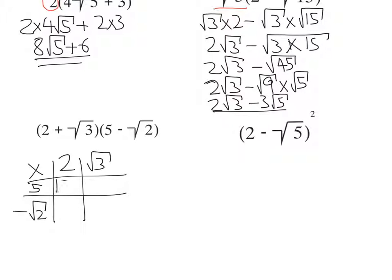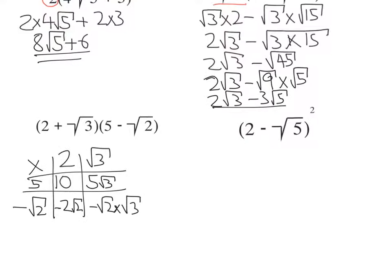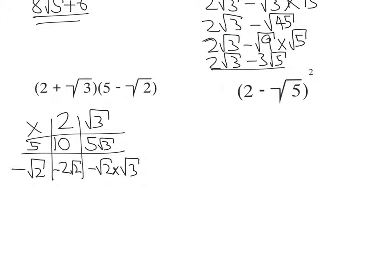So 2 times 5 is 10. 5 times root 3 is 5 root 3. 2 times negative root 2 is negative 2 root 2. And then we've got negative root 2 times root 3. Let's write out those four terms. We've got 10 plus 5 root 3 minus 2 root 2 minus root 2 times root 3.